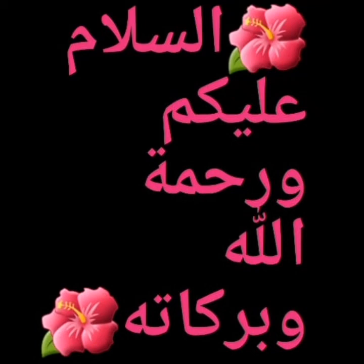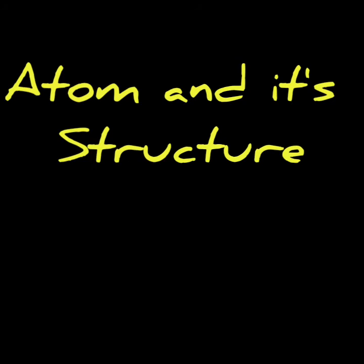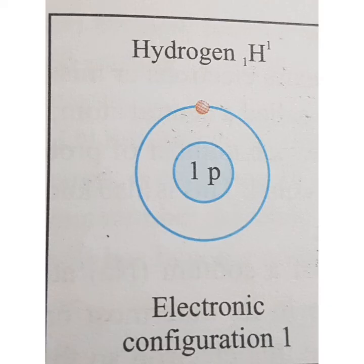Assalamualaikum warahmatullahi wabarakatuh. How are you, students of class 6? Hopefully you are all fine and safe at home. As you know, from the chemistry portion we are studying the chapter 'Atom and Its Structure.' In the previous lectures we have seen the definitions of atomic number and mass number, and I gave you examples of hydrogen and helium and explained the structure of these two atoms.